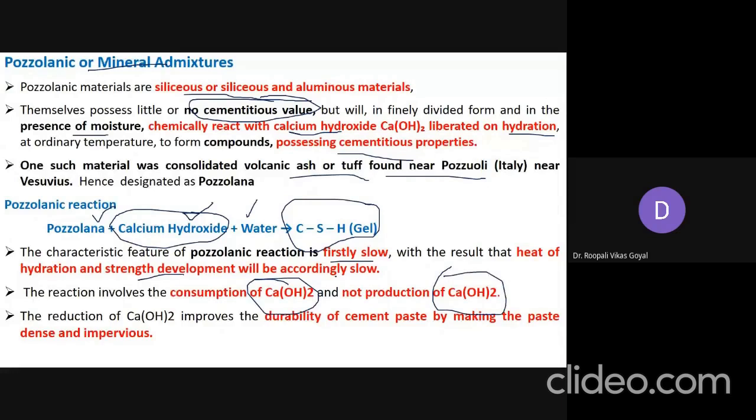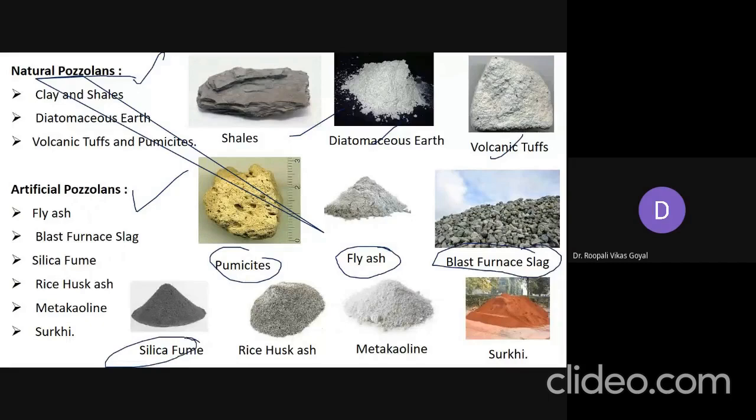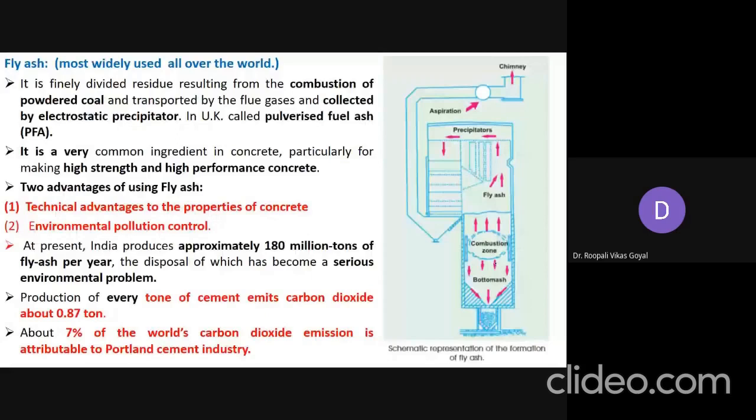Natural pozzolanas include shale clay, diatomaceous earth, and volcanic ash. Artificial pozzolanas include pumice, fly ash, blast furnace slag, silica fume, rice husk, metakaolin, and surkhi. We are going to discuss in detail the three major ones: silica fume, fly ash, and blast furnace slag.